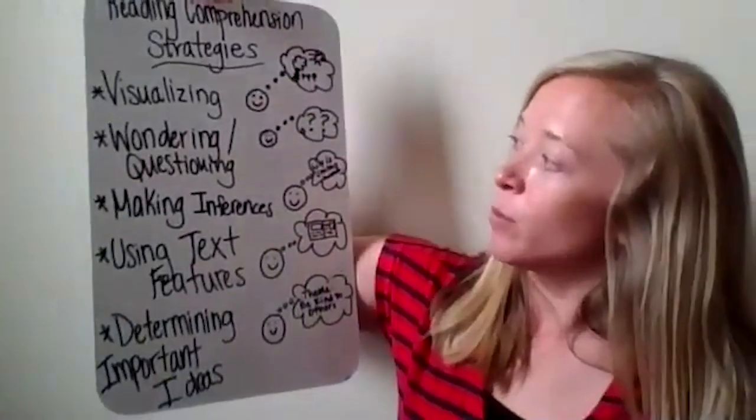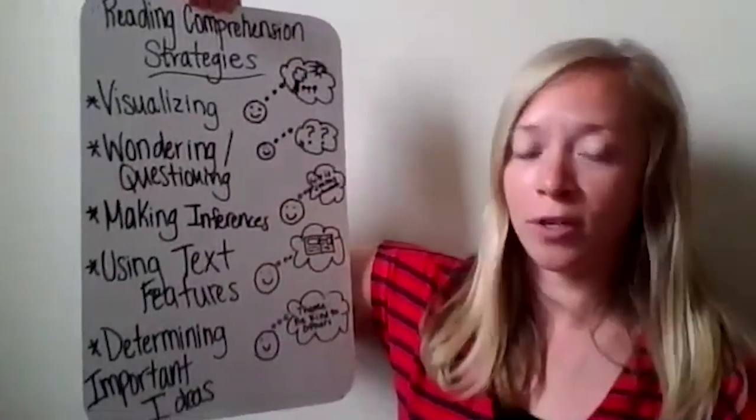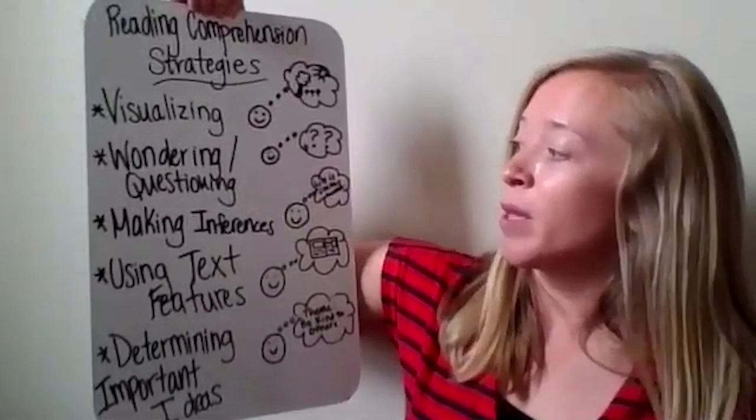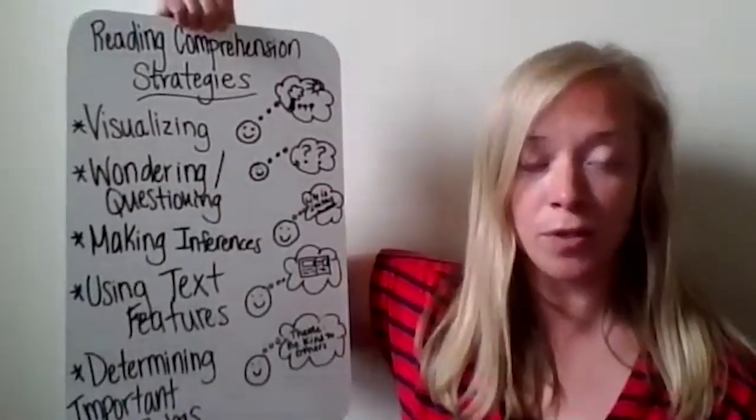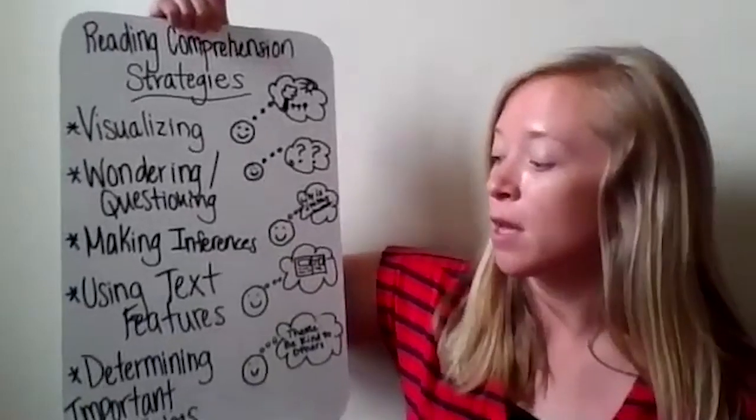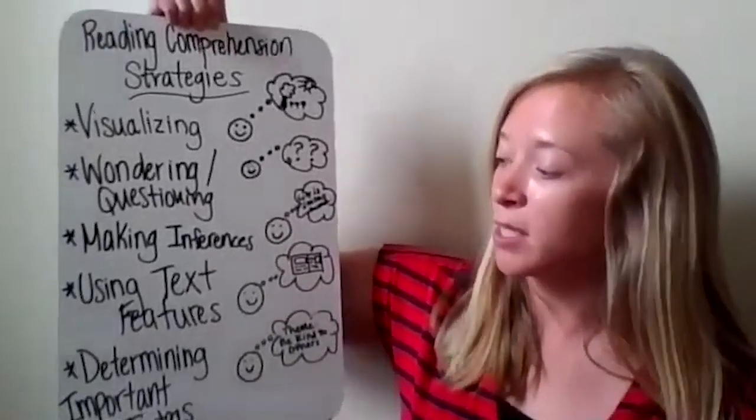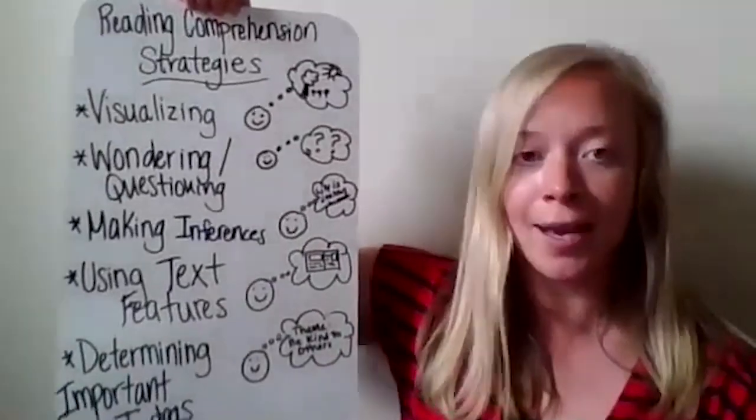We asked questions and wondered at the beginning. We made inferences about the characters, so wondering what kind of person Little Dolly is, what kind of person Kenyon is. And we practiced determining important ideas.